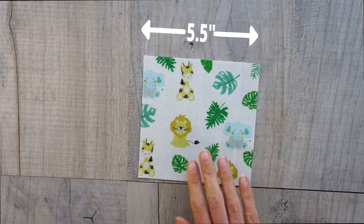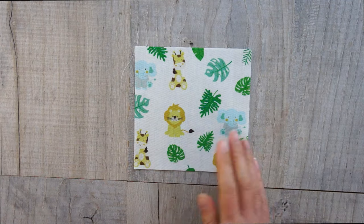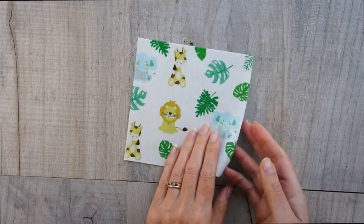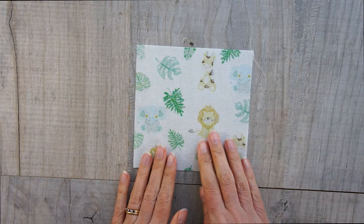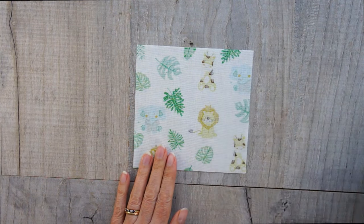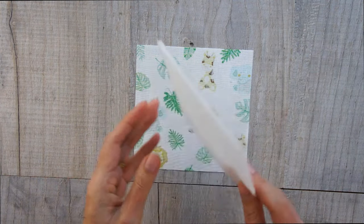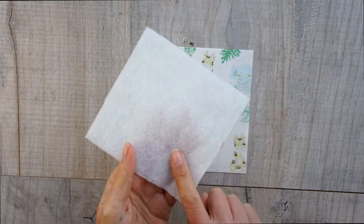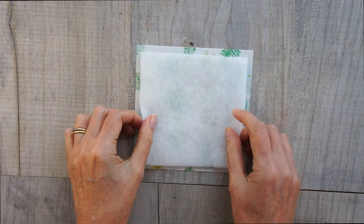What you're going to need is for each mat, you're going to need to cut out two squares of fabric, five and a half inches by five and a half inches. I've chosen two different fabrics, but you could equally well use the same for the top and the bottom. Now, whichever one you choose for the top, you're also going to need a square of fusible fleece. I've cut mine five inches by five inches.